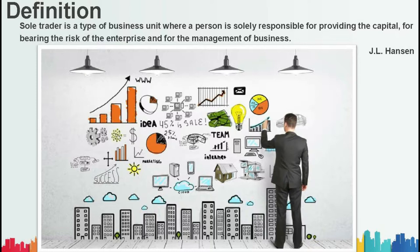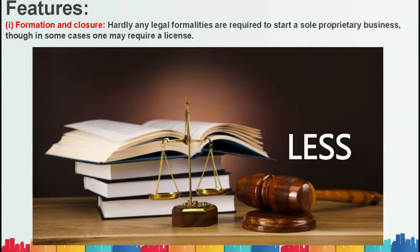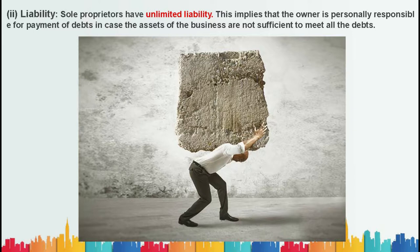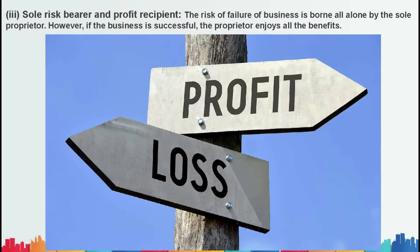The first feature of sole proprietorship is formation and closure. Hardly any legal formalities are required to start or close a sole proprietorship business. Though in some cases one may require a license, there are very few legal formalities involved. The second feature is liability: sole proprietors have unlimited liability, meaning the owner is personally responsible for payment of debts if the business assets are not sufficient to meet them.